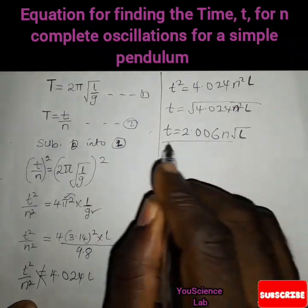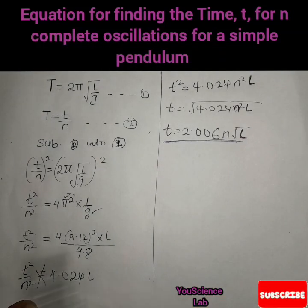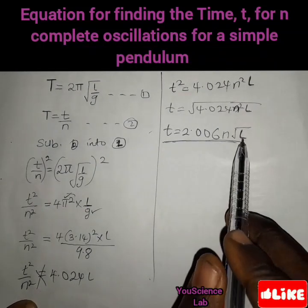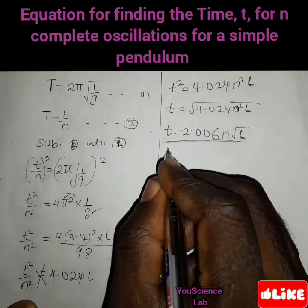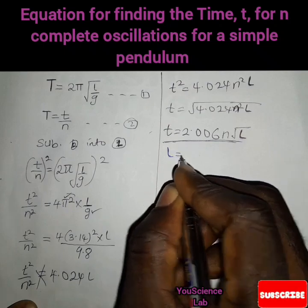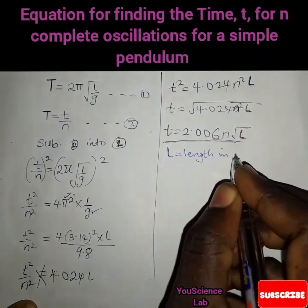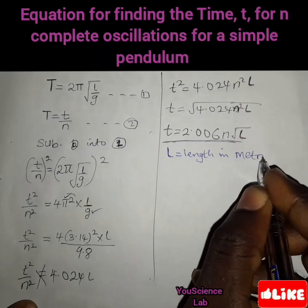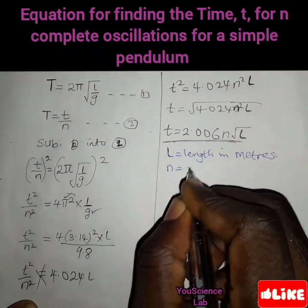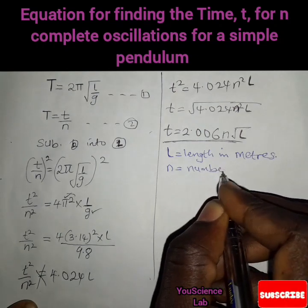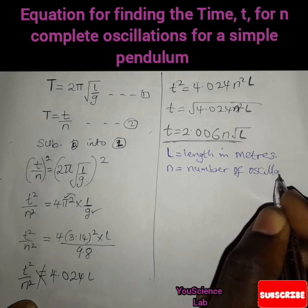With this formula we can calculate the time to complete n oscillations, where L is the length in meters and n is the number of oscillations.